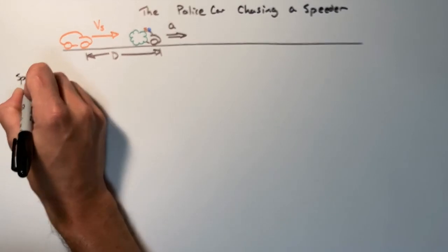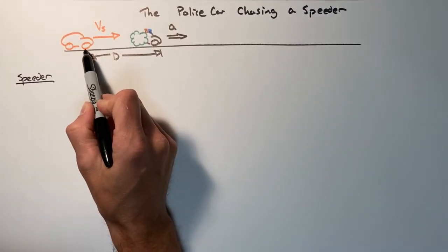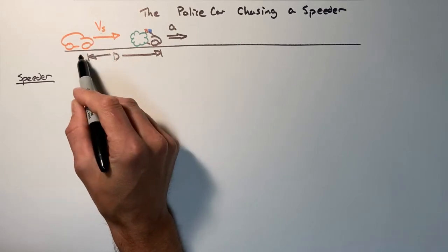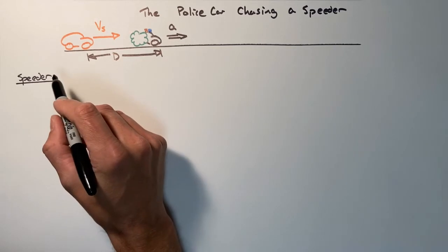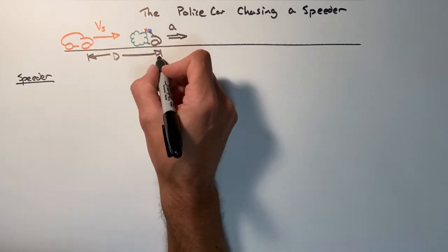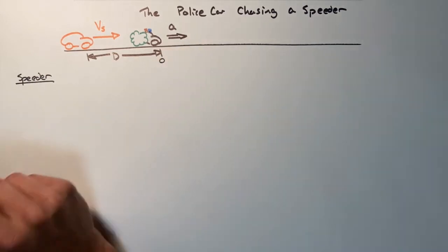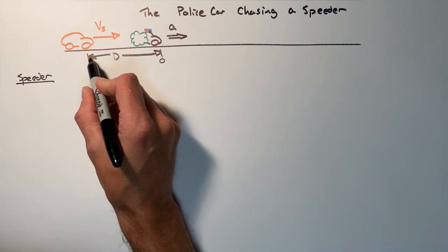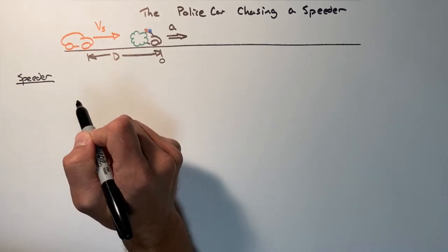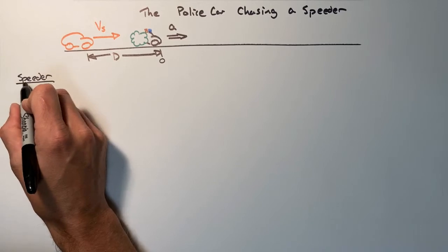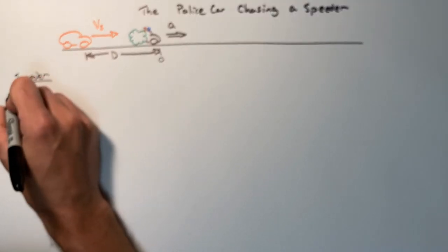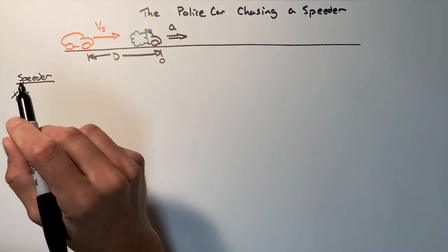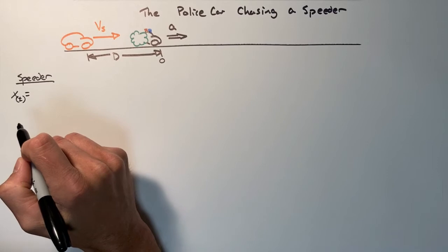First, let's look at the speeder. The speeder travels along at some constant velocity v-sub-s. We have to choose where the origin is — where position equals zero. I'm going to choose the position where the police car starts as position zero. The speeder is going to have some position as a function of time given by the kinematic position equation.